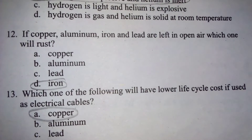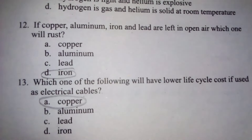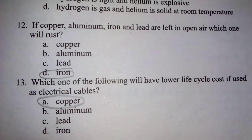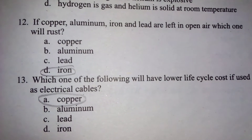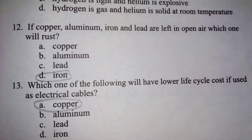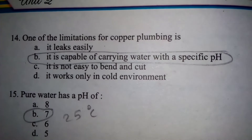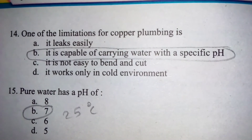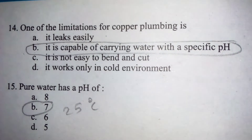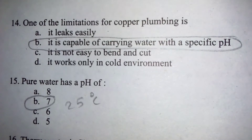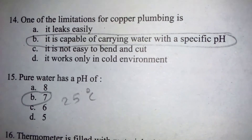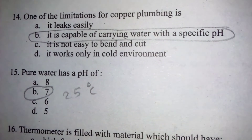Which one of the following will have lower life cycle cost if used as electrical cables? Copper کا lower life cycle cost ہے۔ One of the limitations of copper plumbing is that it is capable of carrying water with only a specific pH.